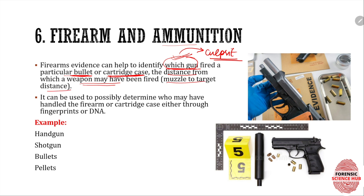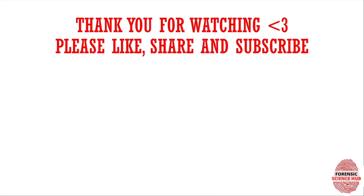The muzzle-to-target distance — the muzzle being the front end of the gun and the target being where the victim was — can be determined. Firearms can also help identify who handled them, since firearms will have fingerprints or DNA on them. Examples of firearms include handguns such as revolvers, pistols, and shotguns. Ammunition includes bullets and pellets, which can be found at the crime scene and act as evidence.